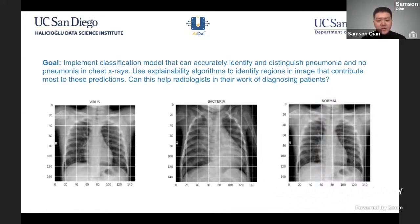This introduces the idea of using explainability algorithms, also known as explainable AI, to analyze a model and the data it's predicting on in order to understand exactly where the model is looking. The ultimate goal is to see if this type of framework can help radiologists in their work in diagnosing different patients.